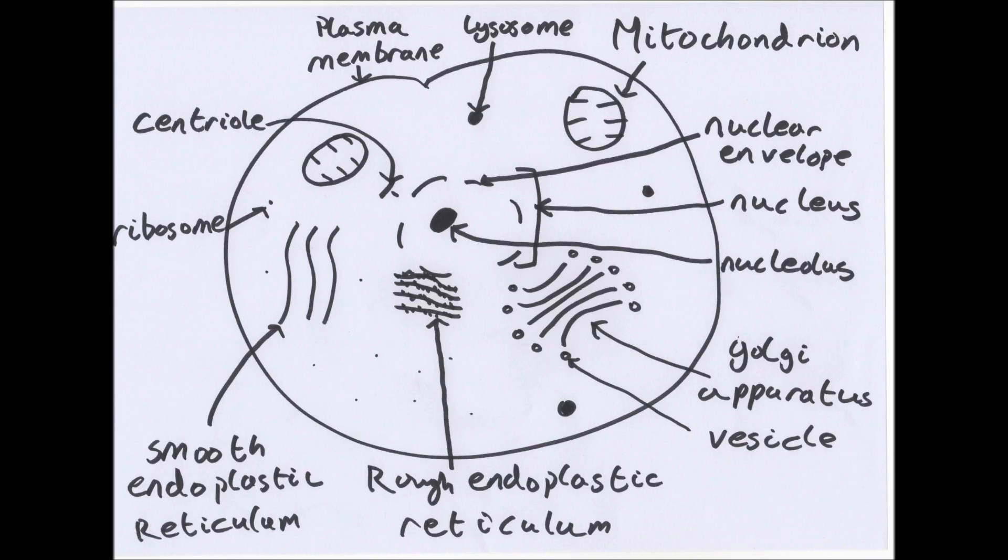Now all the things that are labeled are called organelles. These are just structures in the cell that have a specialized function. There are lots of them and I will come on to say what they all are.